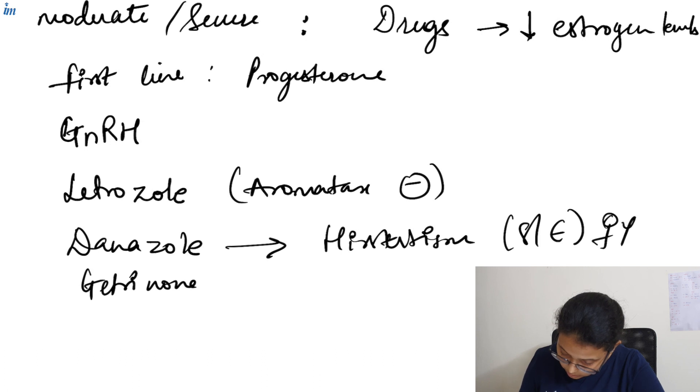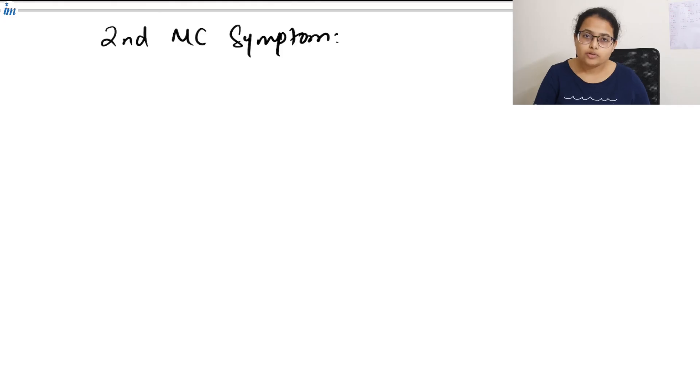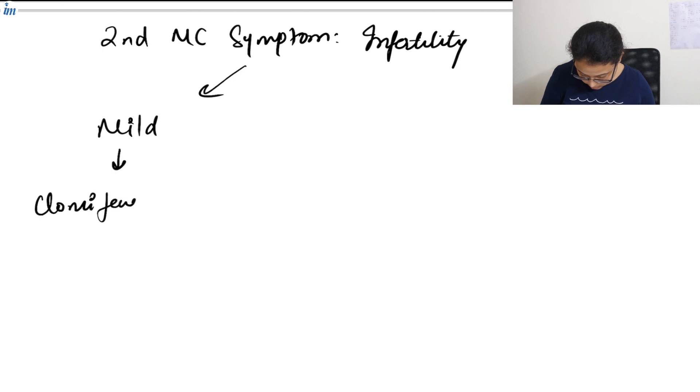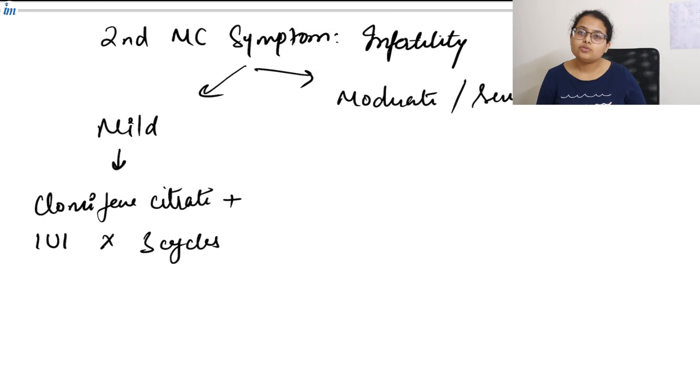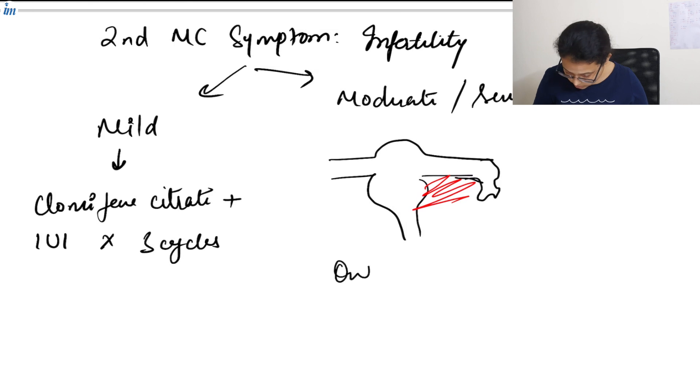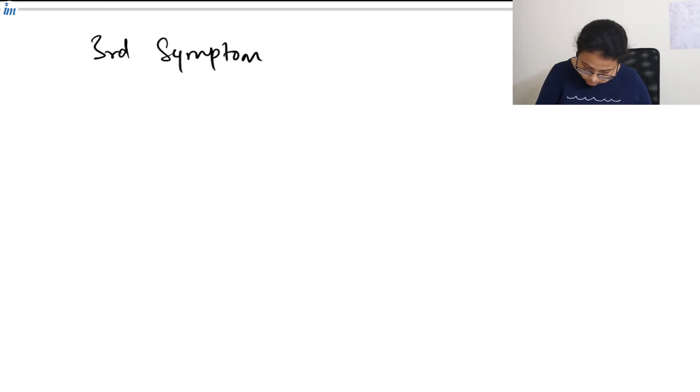Now second most common symptom is infertility. In case of mild infertility we'll try clomiphene citrate and intrauterine insemination for three cycles. In case of moderate to severe infertility there are adhesions formed between uterus and fallopian tube. If there's a uterus and this is the fallopian tube, the adhesions are formed between them. So in this case only treatment available is IVF.